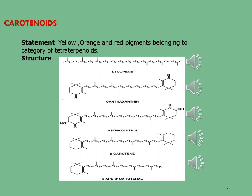The next molecule is astaxanthin. It is found in salmon, lobster, crab, and crayfish, as well as in krill oil and algae. Astaxanthin is taken by mouth for treating Alzheimer's disease, Parkinson's disease, stroke, high cholesterol, liver diseases, age-related macular degeneration, age-related vision loss, and for preventing cancer.